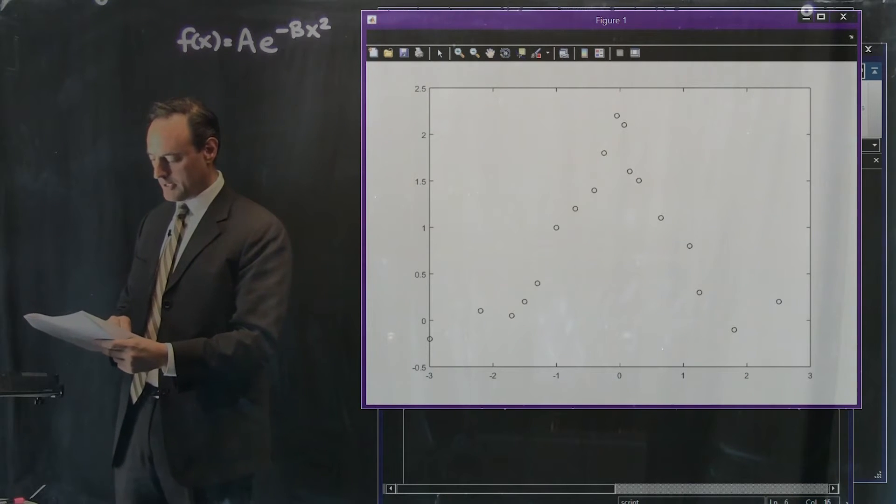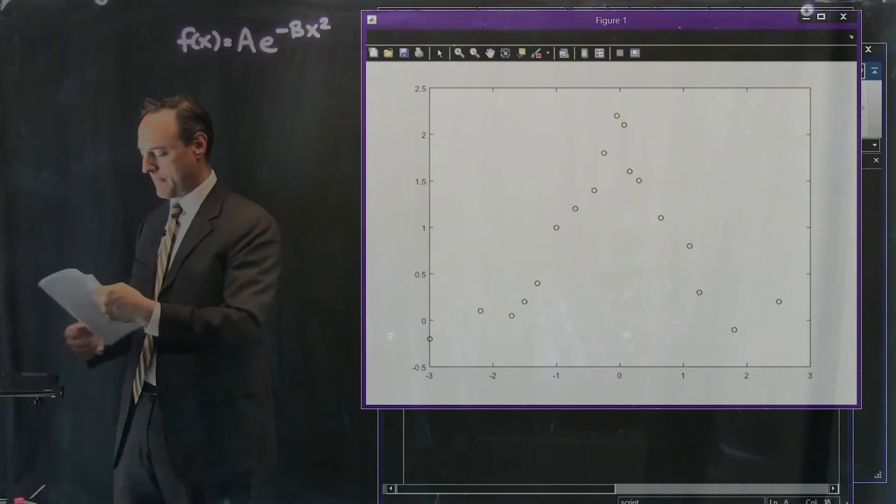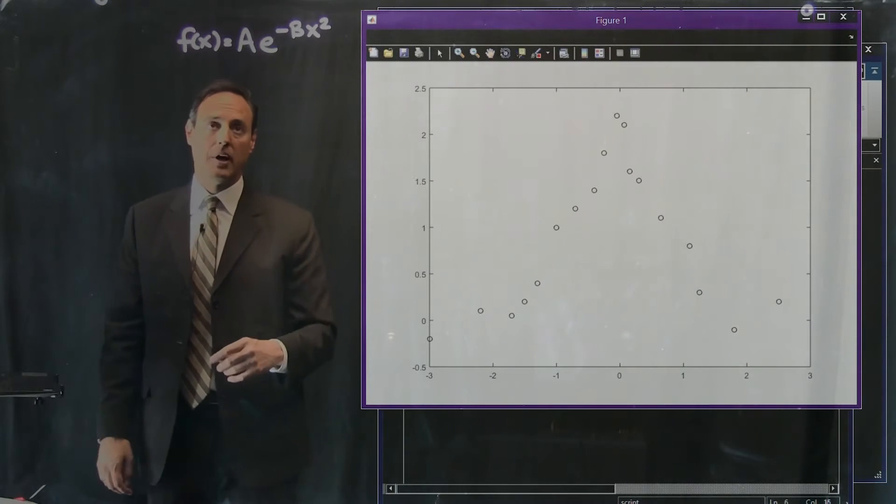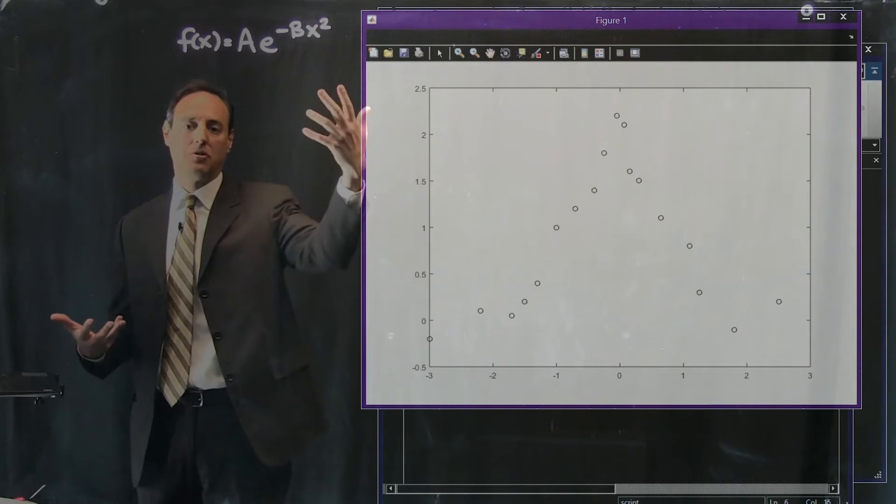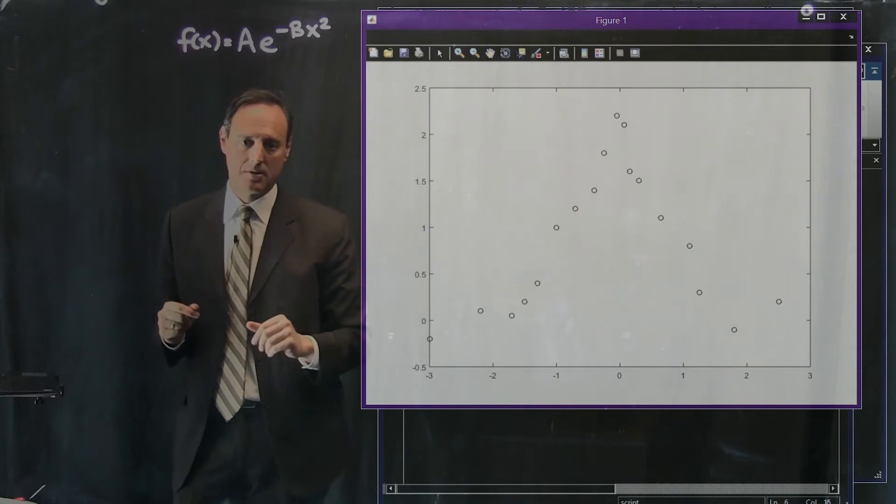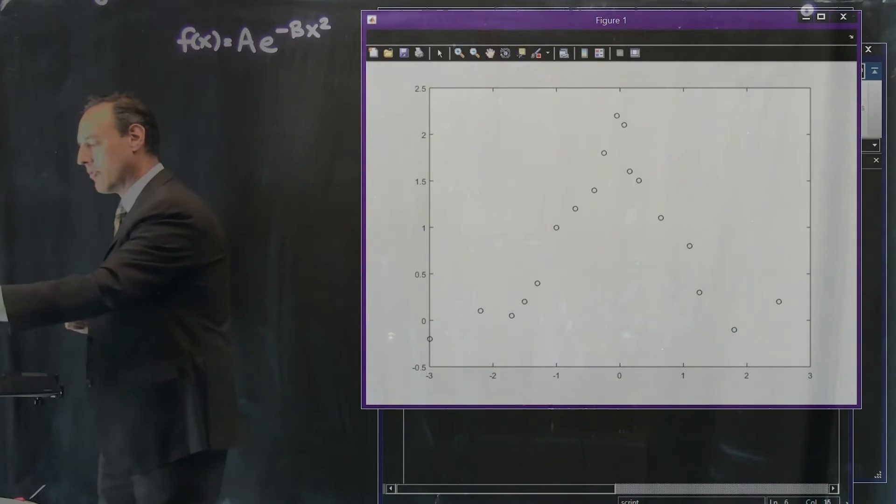All right, so let's go and start programming this up. Remember we're going to try to minimize L2 error, which is going to take this minus the actual values, square it, sum it. That's what we need to minimize. Just keep that in mind as we go forward.